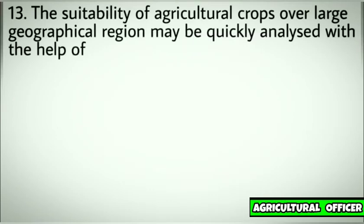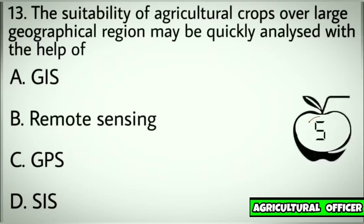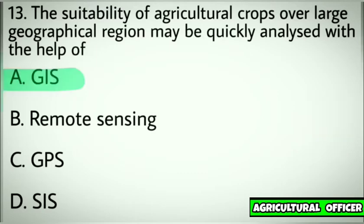Question number thirteen. The suitability of agriculture crops over large geographical regions may be quickly analyzed with the help of. Options: A. GIS. B. Remote sensing. C. GPS. D. SIS. Correct answer: A. GIS.